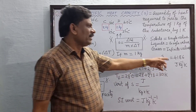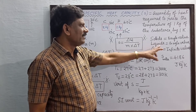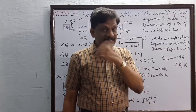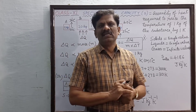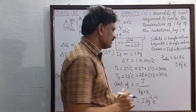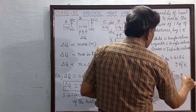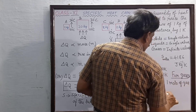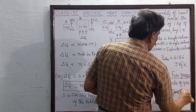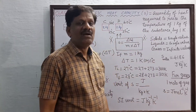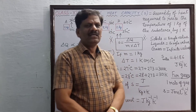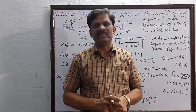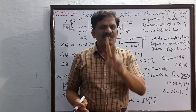For solids and liquids, we normally express specific heat capacity in joule per kilogram per kelvin. But for gases, we don't consider 1 kilogram; instead we consider 1 mole of the substance. Therefore, for gases exclusively, the specific heat capacity is expressed in joule per mole per kelvin. Among the infinite values gases can have, only two are significant.